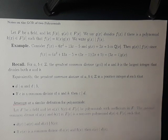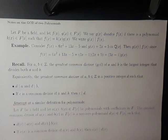We say that g of x divides f of x if there is a polynomial k of x with coefficients in f such that f of x equals k of x times g of x, and we use the same notation as we do for integers.